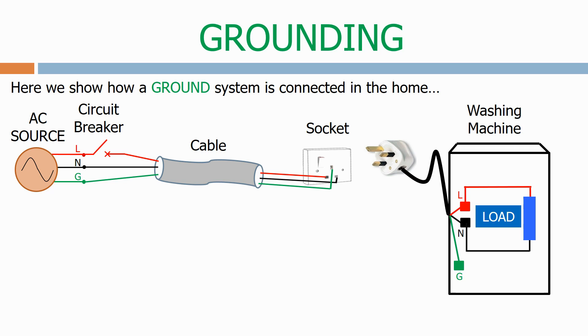Inside the washing machine we have a live and neutral terminal connected to the load and we have a ground terminal. The ground terminal is connected to the metal case of the washing machine.